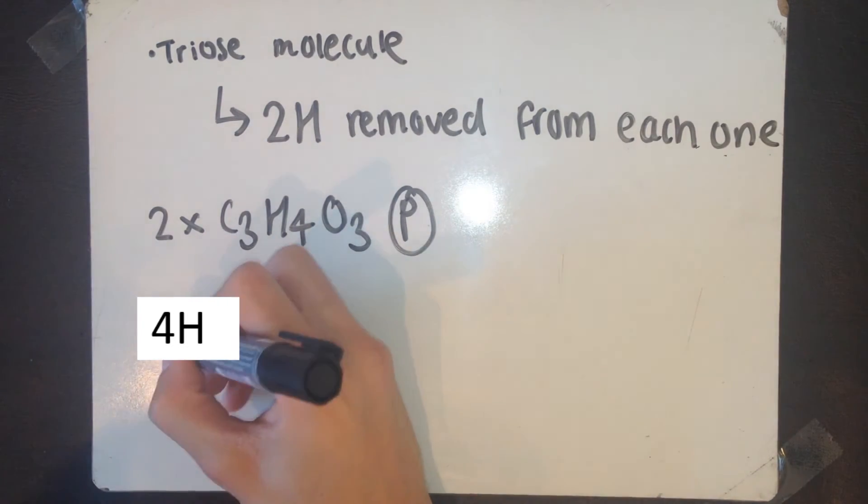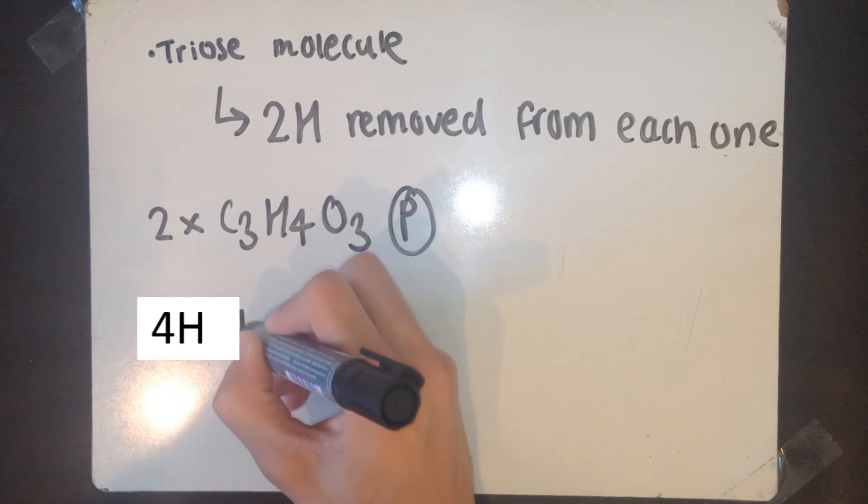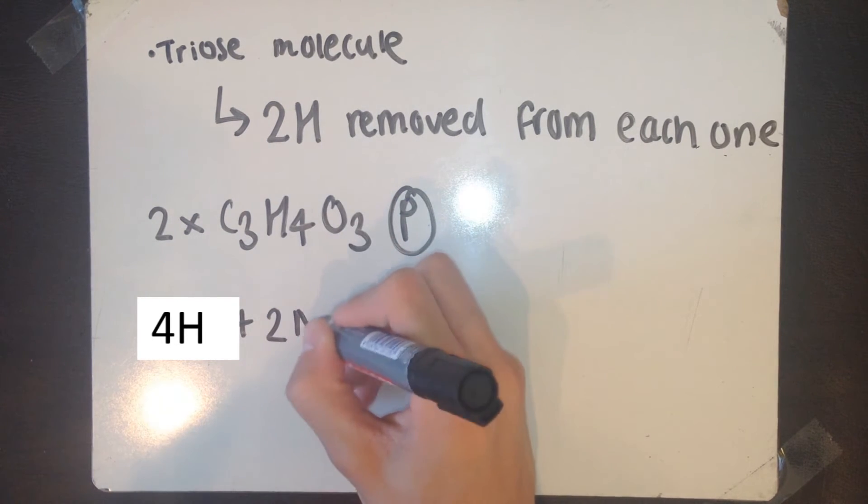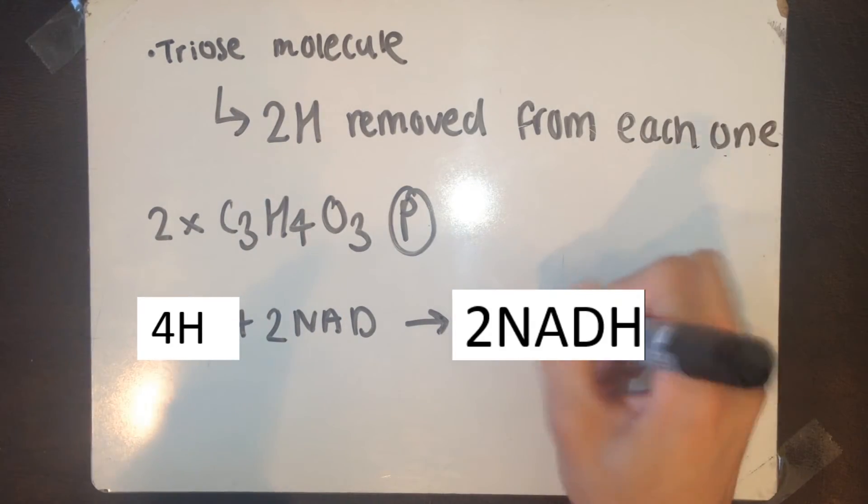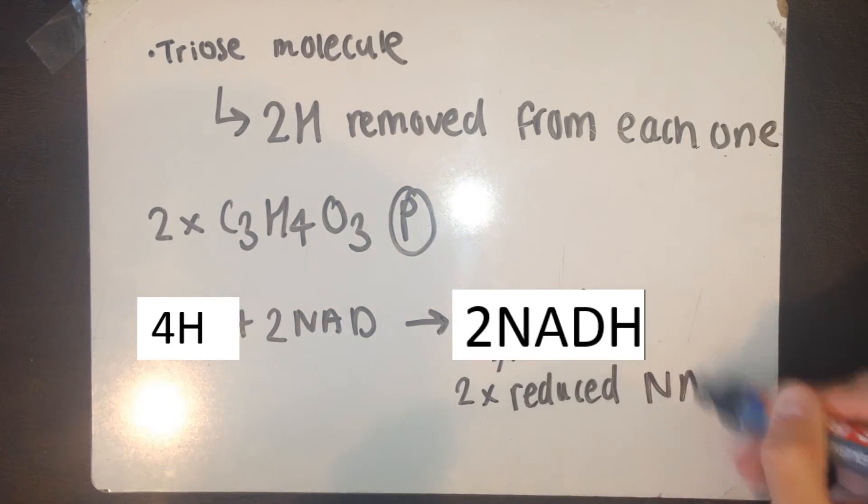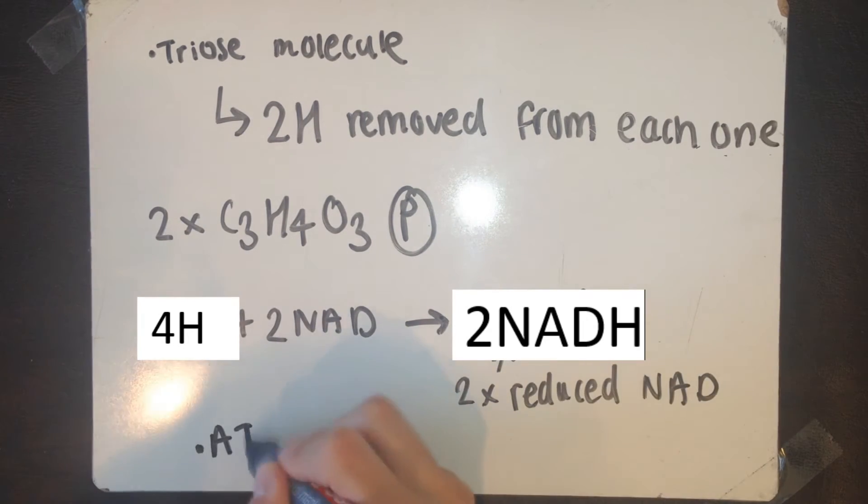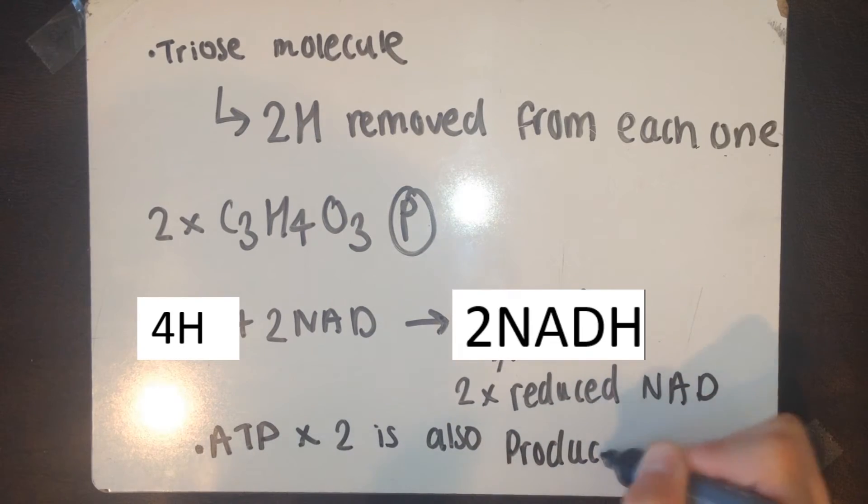Now a coenzyme called NAD, nicotinamide adenine dinucleotide, combines with two hydrogen atoms. So each NAD combines with two hydrogen atoms. And what this does is give you reduced NAD. Here two ATP molecules are also produced. This is during substrate level phosphorylation.